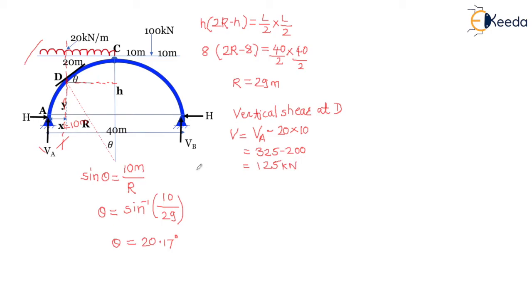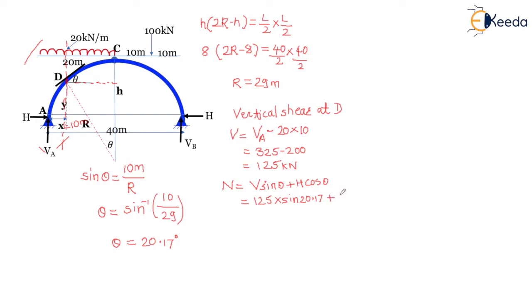The normal thrust formula is N = V sin θ + H cos θ. Substituting values: N = 125 × sin(20.17°) + 312.5 × cos(20.17°) = 336.437 kN.